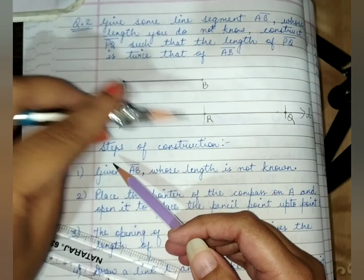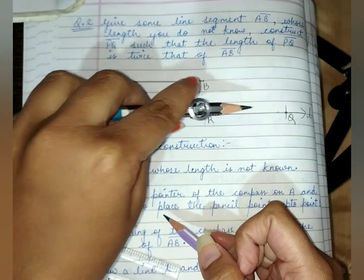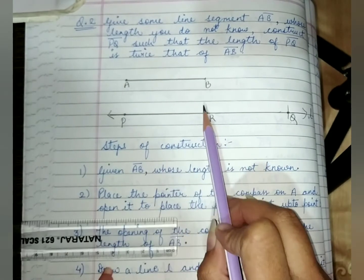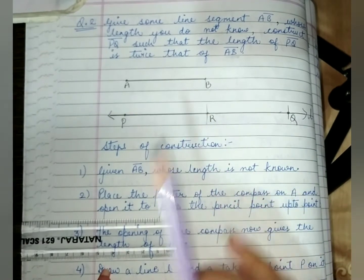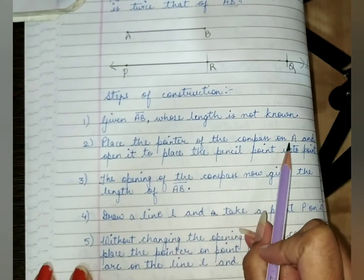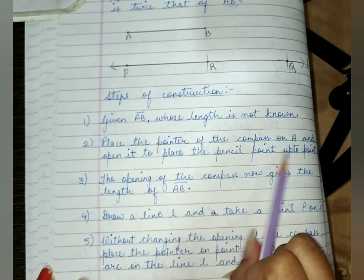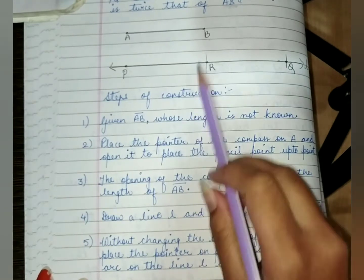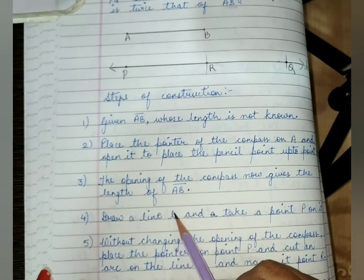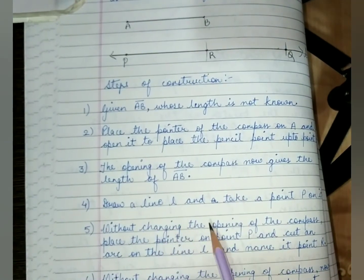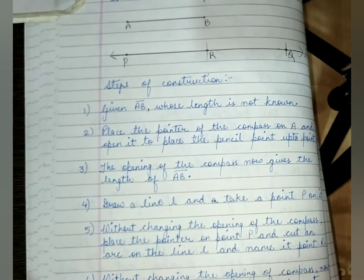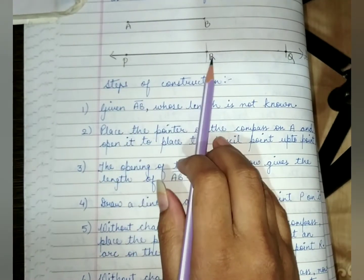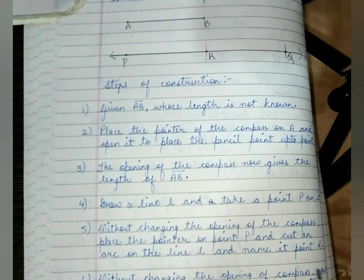So with the compass we placed the pointer on P, then on R. Again we place the pointer on R and cut one more arc — naming it point Q. We have done this twice because we need to make PQ twice the length of AB: PR gives one copy of AB, and RQ gives another, so PQ = 2×AB.